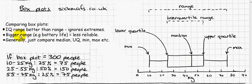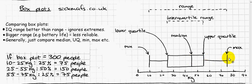Another common comparison is two different products and their reliability — a common example is battery life. When comparing two different brands of battery, you probably do want to use the actual range, because you want to see the maximum and minimum battery life. If the minimum is really low, that is really worrying — imagine you're on a camping trip and it only lasts one hour. So if you're comparing two products, the product with the bigger range is less reliable.